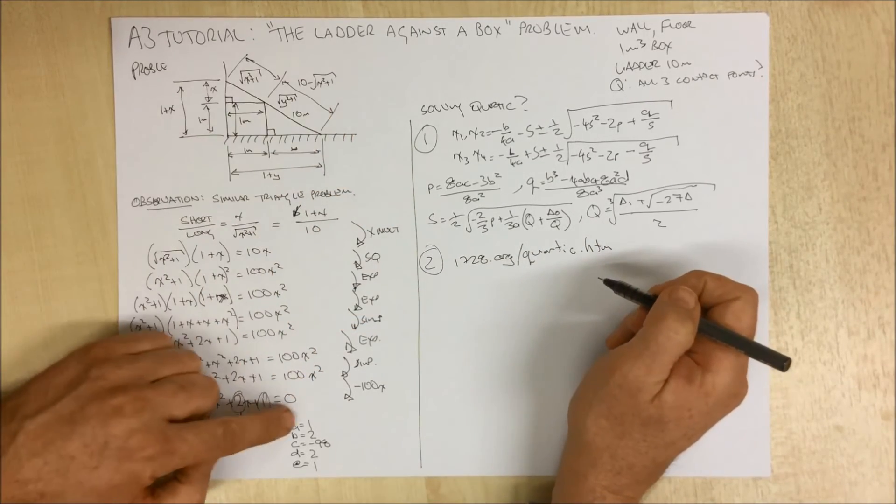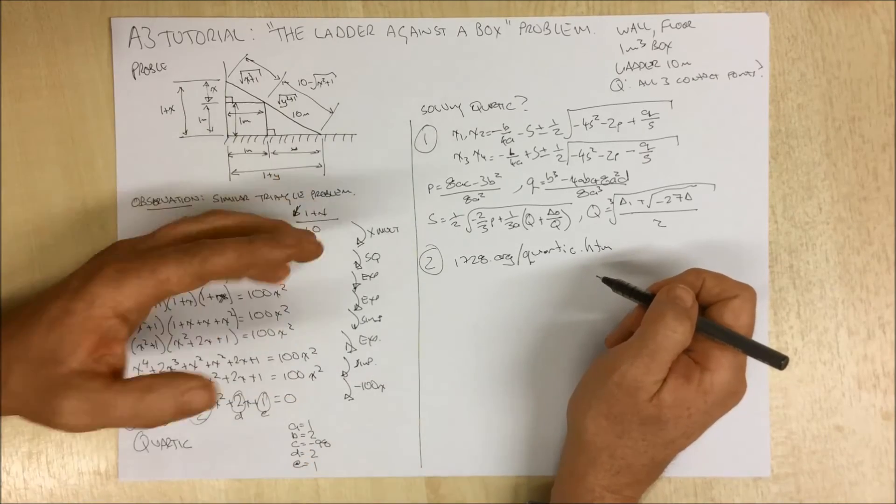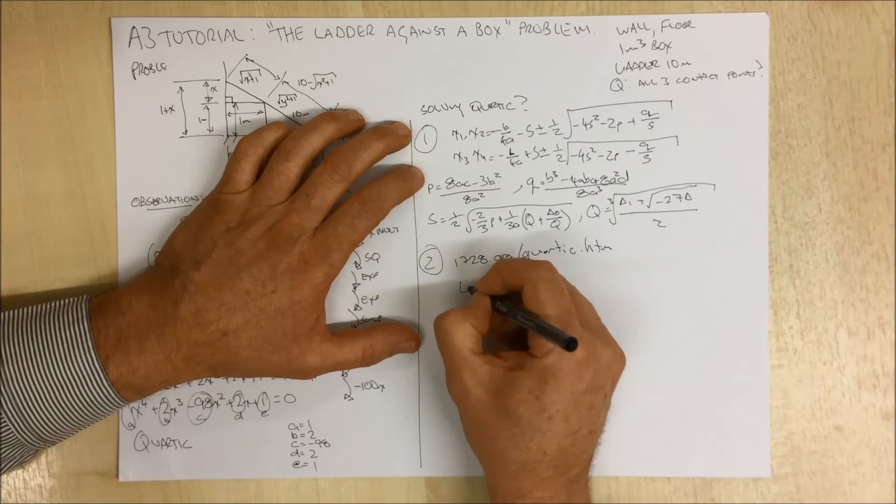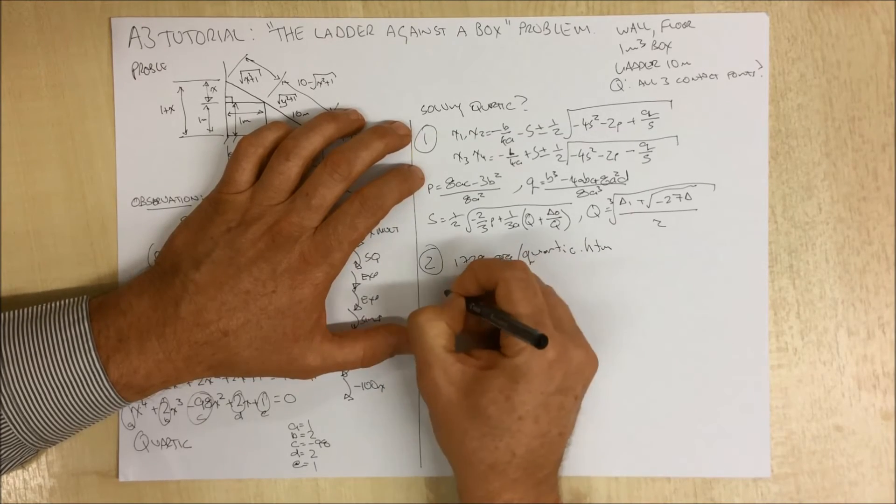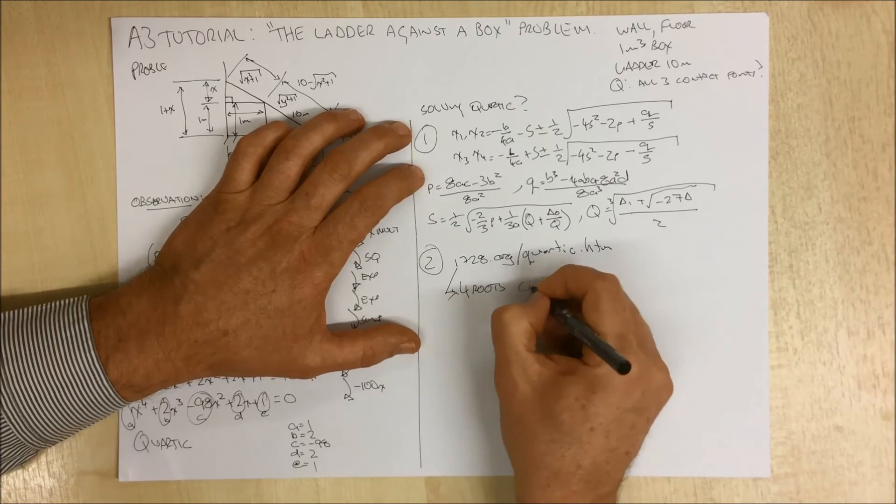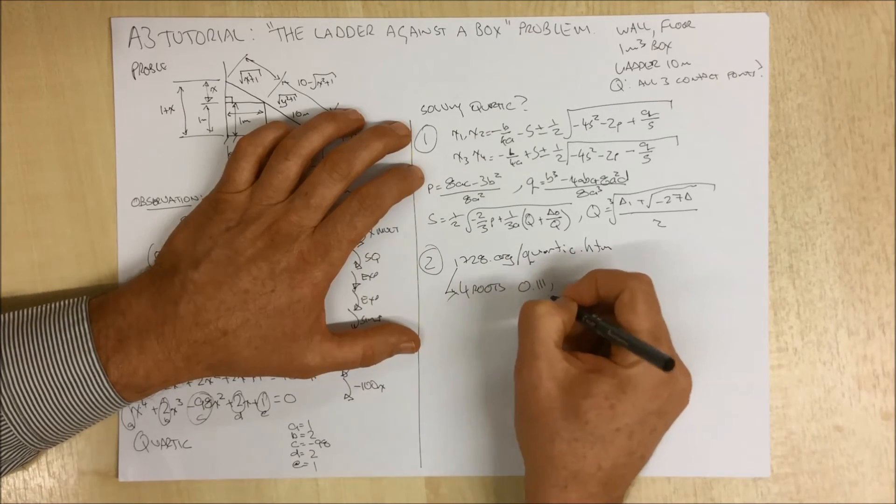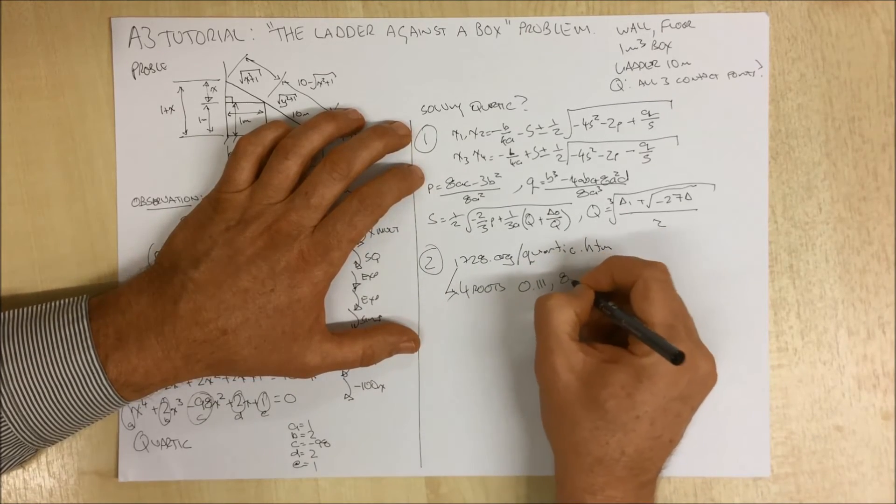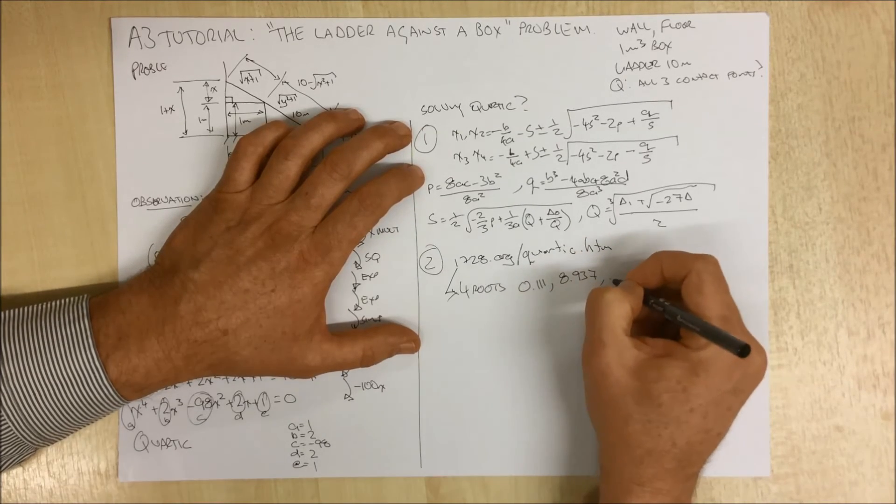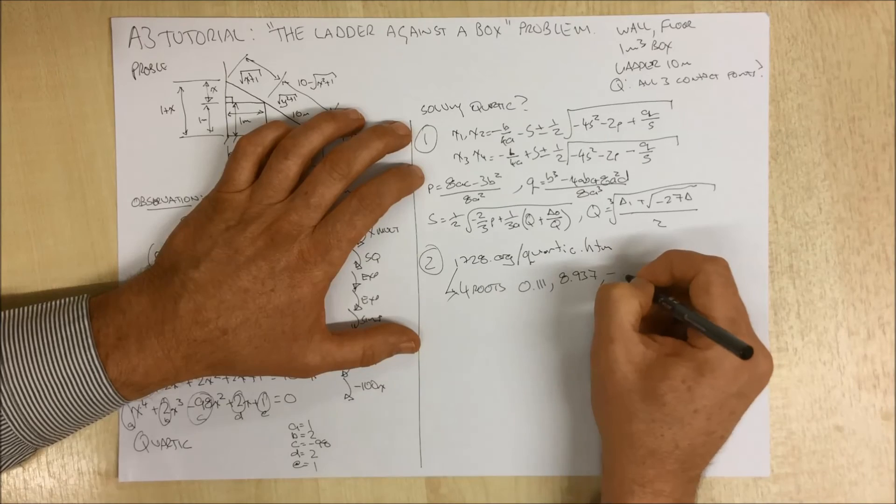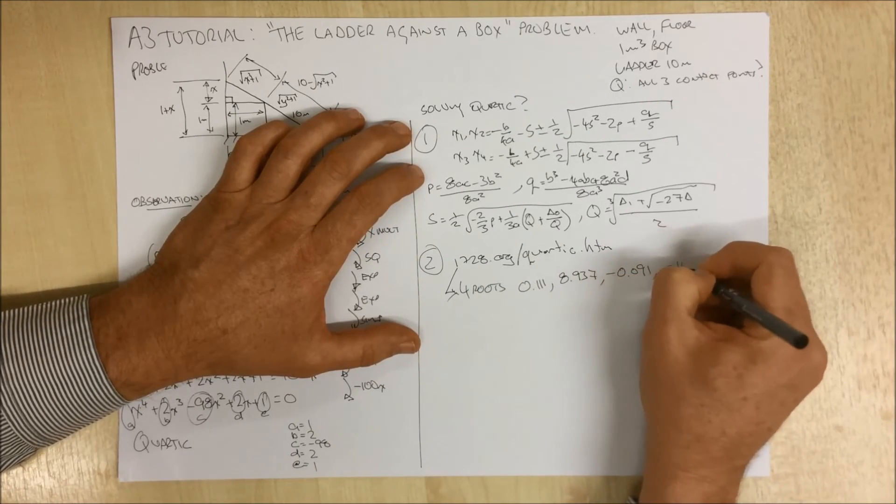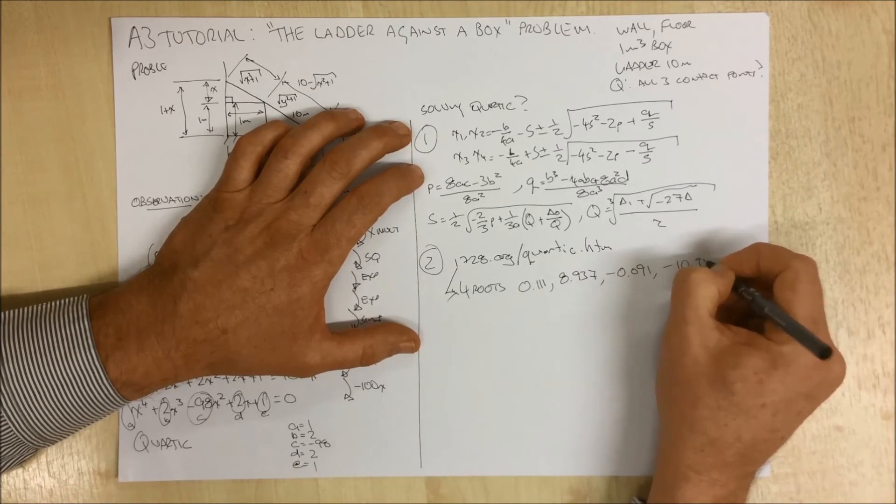And all you do there is you punch these numbers in and it will give you the four roots. And it comes back and it says that our four roots by using this, it says our four roots are 0.111, 8.937, minus 0.091, and minus 10.95.